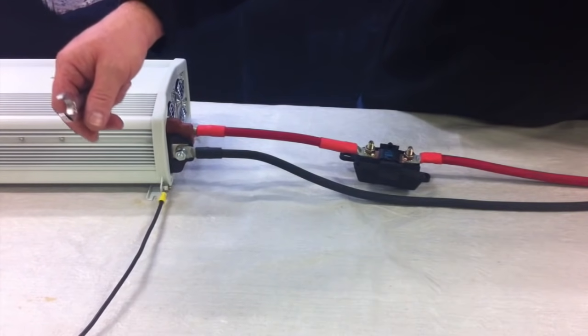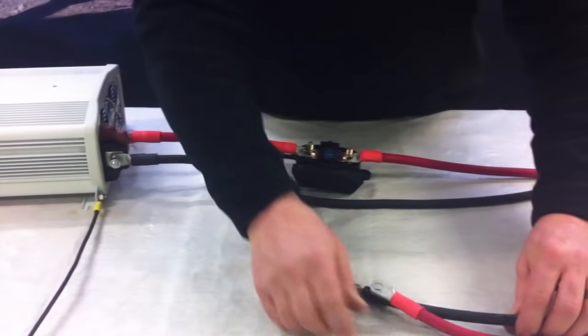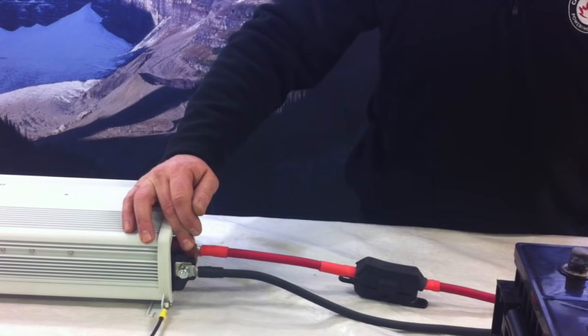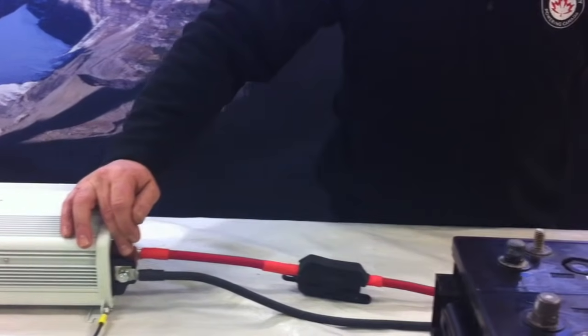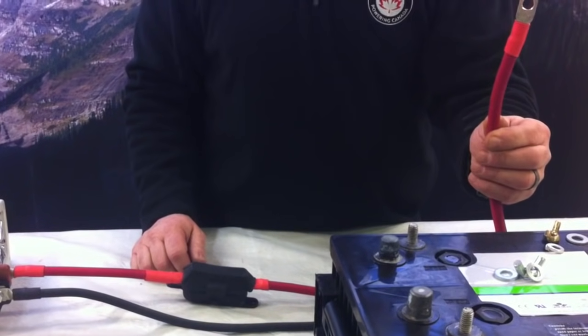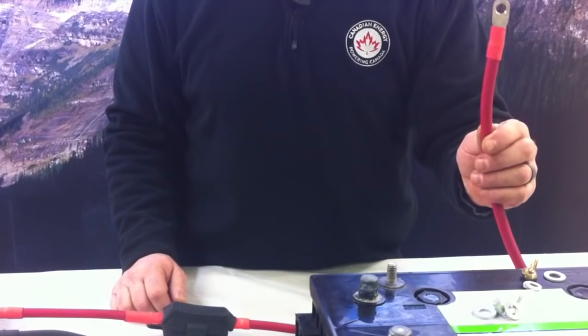Next we're going to go ahead and we're going to bring on our 12 volt battery source. Now that we've got our inverter connections made we're going to go and hook up the 12 volt battery. So what we want to do first is make sure we hook up our positive cable first. And I'll get to the reason why in just a minute.